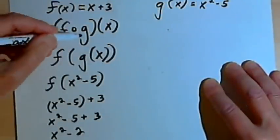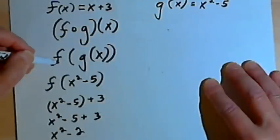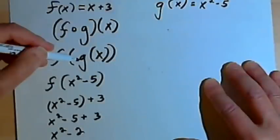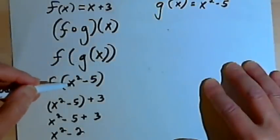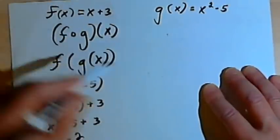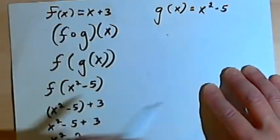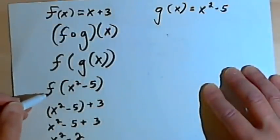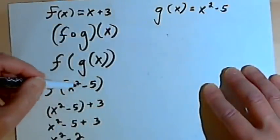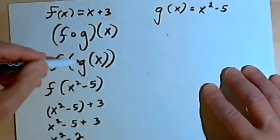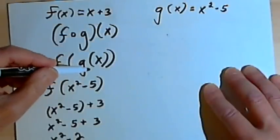So f composed g of x turns into f of g of x. That's just rewriting your original problem. And we plug in what g of x is, which we've been given, and then we find the f of that x squared minus 5, f of what g of x was.